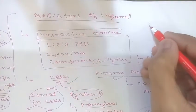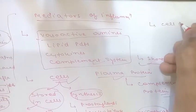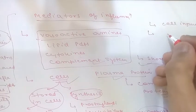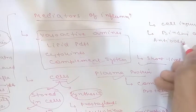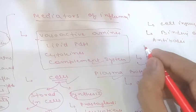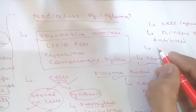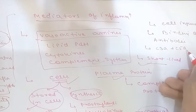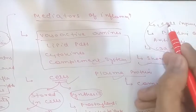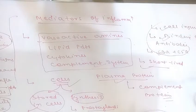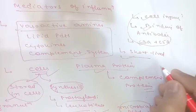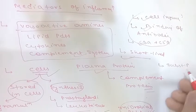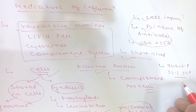Stimuli that cause histamine release include: physical cell injury such as trauma, cold, or heat; binding of antibodies to mast cells, which is seen in hypersensitivity reactions; and products of complement — the anaphylatoxins C3a and C5a — which can also stimulate degranulation. Additionally, neuropeptides such as substance P, and cytokines such as IL-1 and IL-8, may also trigger release of histamine.